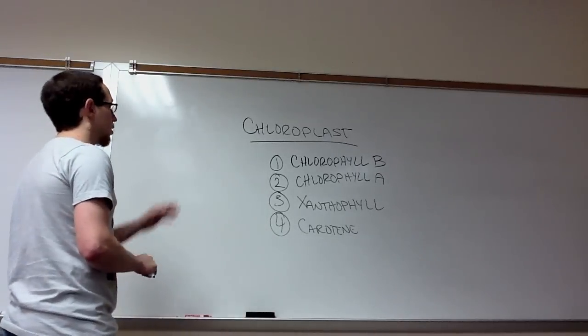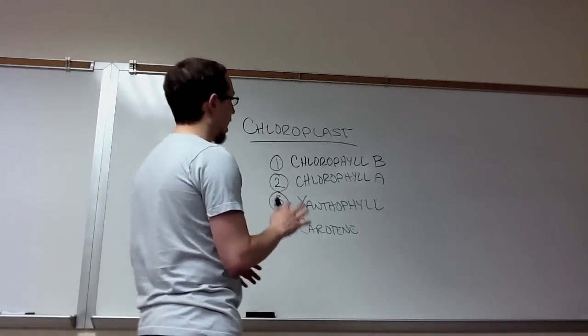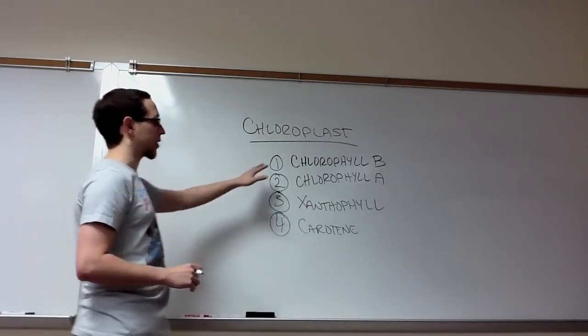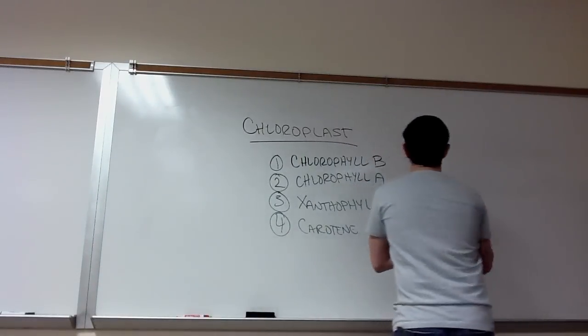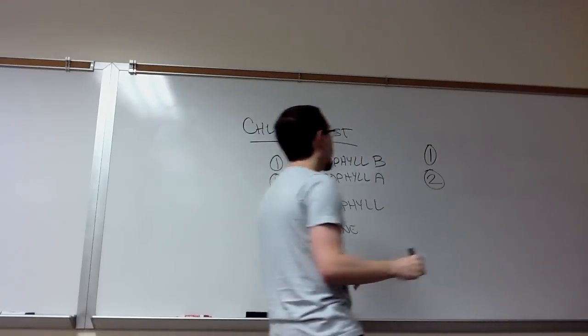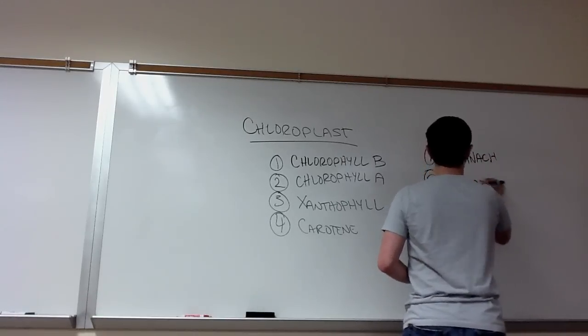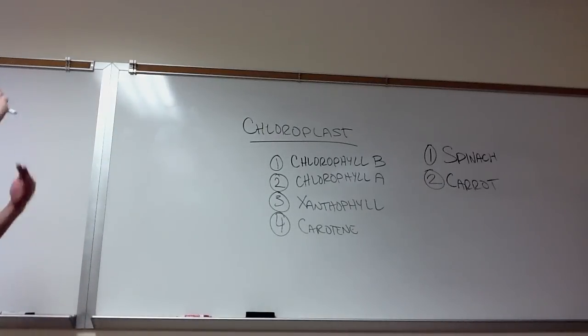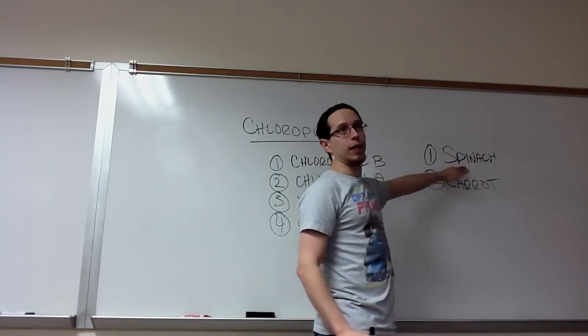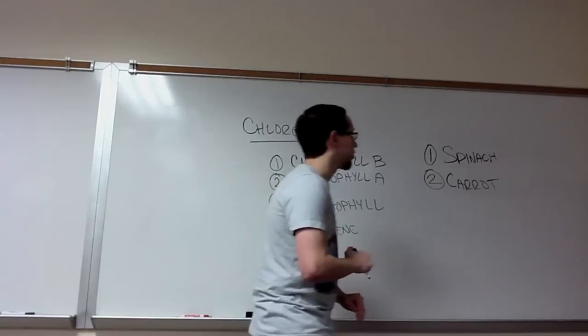We've got these different pigments, and these are all inside of the chloroplast, which is inside of a cell, which is inside of a leaf. The first exercise in the lab was intended to analyze the relative absorbent and transmittent spectrums of these pigments. What we did was we took two different solutions, and these were extracts. One was a spinach extract, and one was a carrot extract. Think about what color you expect the spinach extract to be. It's going to be green. And the carrot extract is going to be orange.